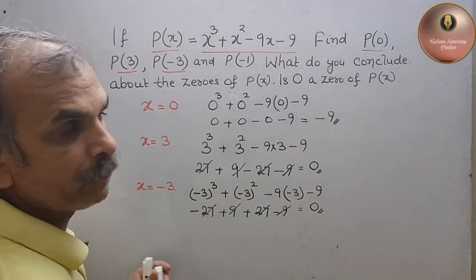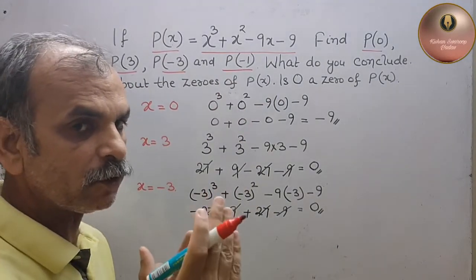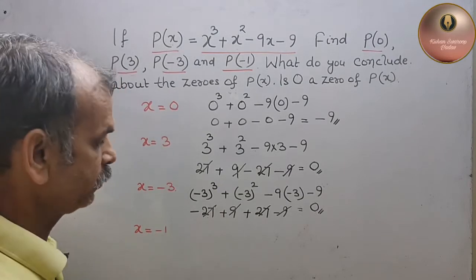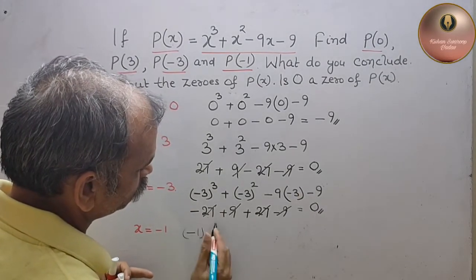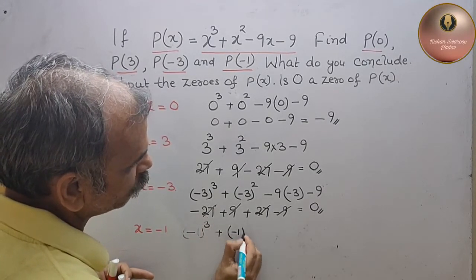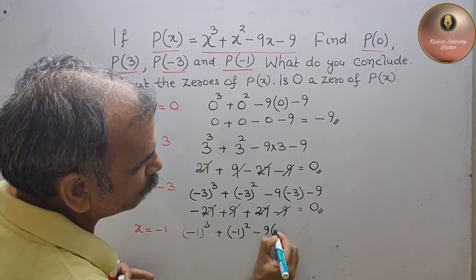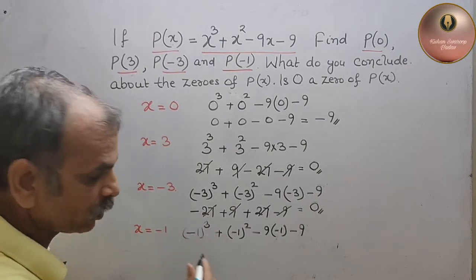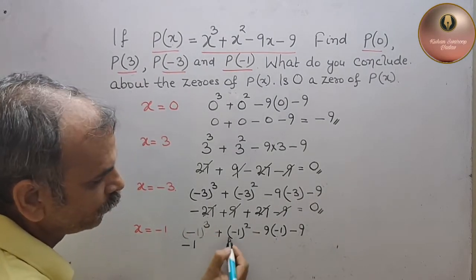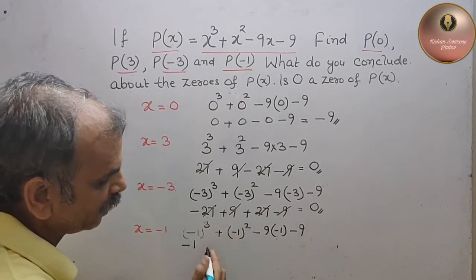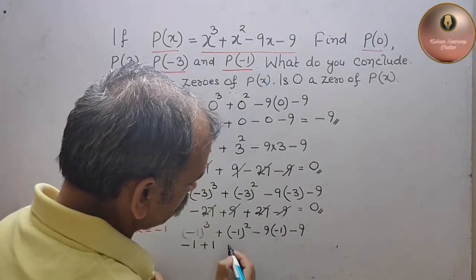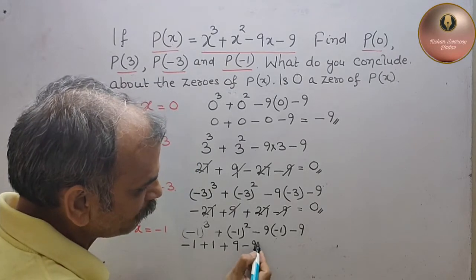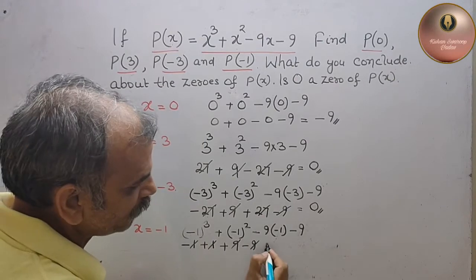Next, p(-1) — that means x is equal to minus 1. जहां पर भी x है, put the value as minus 1: (-1) cube plus (-1) square minus 9 into (-1) and minus 9. Minus 1 cube is minus 1, minus square is plus so plus 1, minus into minus is plus 9, and minus 9. Plus 9 minus 9 gone, plus 1 minus 1 gone, that means that is equal to 0.